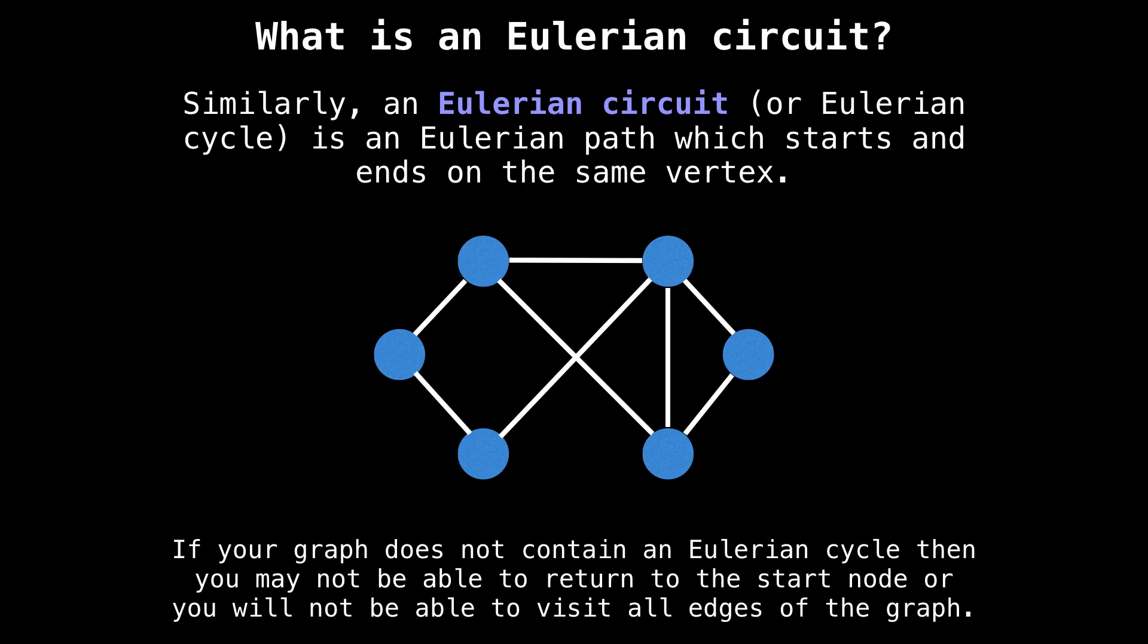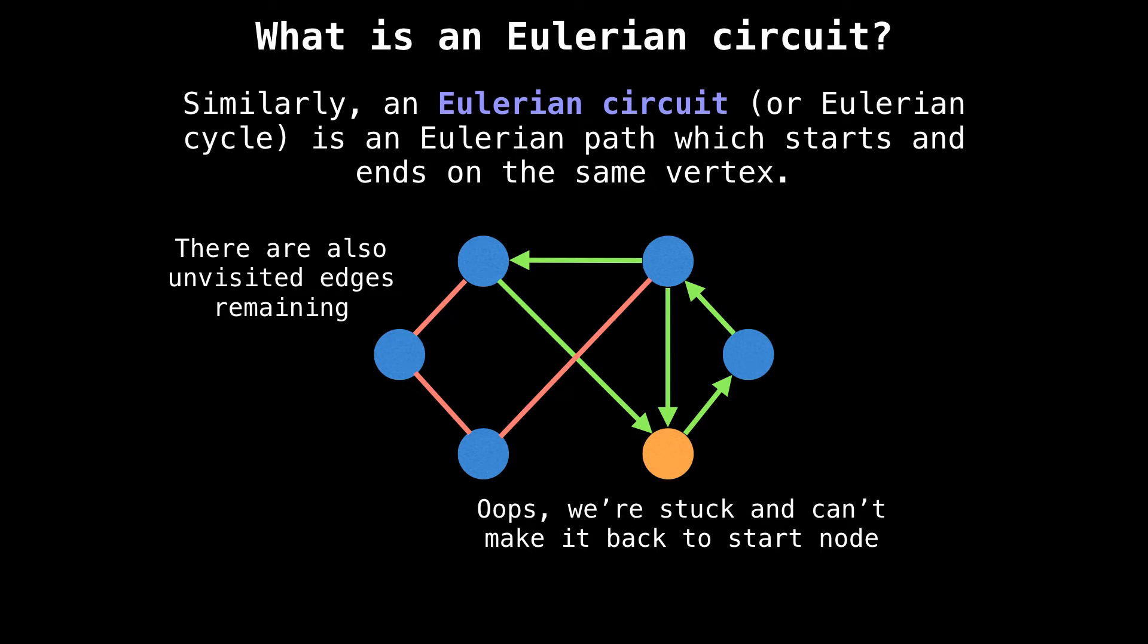If your graph does not contain an Eulerian circuit, you may not be able to return to the start node or you will not be able to visit all the edges of the graph. For example, let's start another circuit starting from the same node on this slightly modified graph. So by randomly selecting edges to traverse, we weren't able to make it back to the starting node. Furthermore, we also have unvisited edges, so that's double bad.